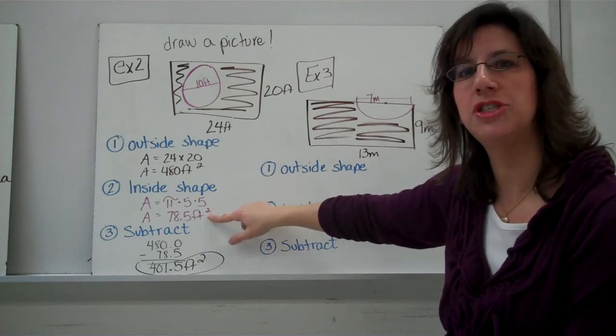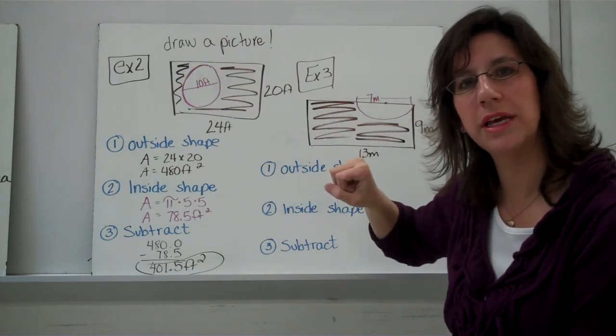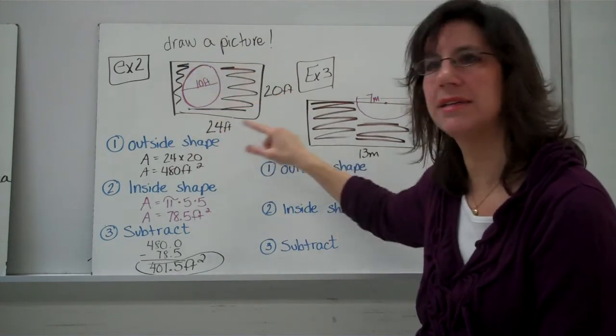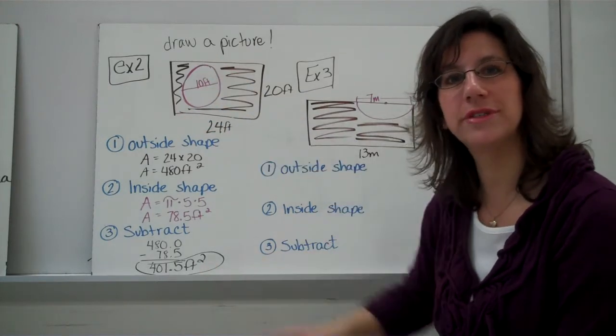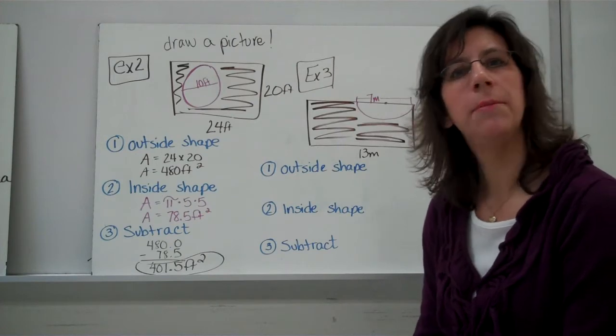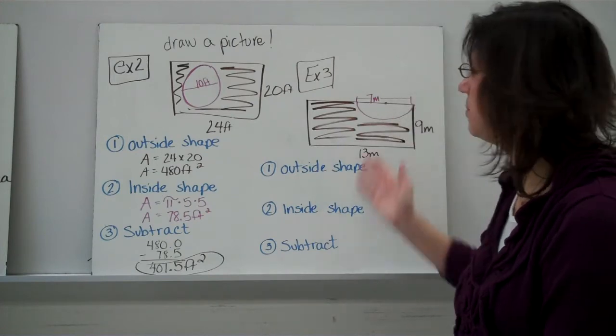And then you find the area of the inside shape. Now, remember, it's a circle, so you're doing pi times the radius, times the radius again. And then, because you're finding out how much is left, we're cutting out this part of the grass by putting in the pool. So, how much grass or yard is left, you're going to subtract. Alright. Hopefully, you were successful. If not, pause the video, go back, figure out your mistakes, and then move forward, and try example three on your own.